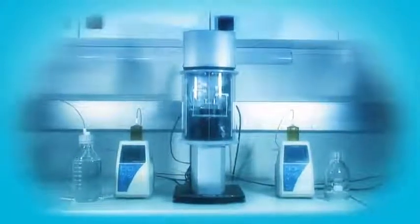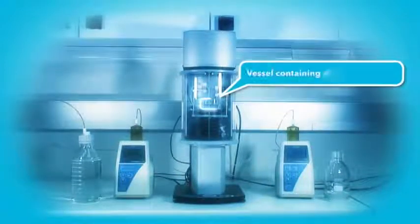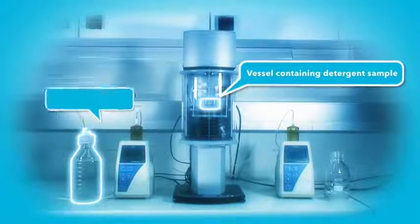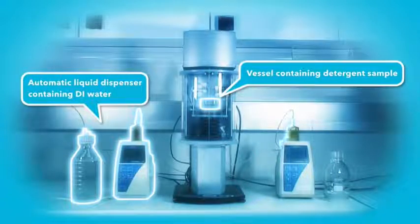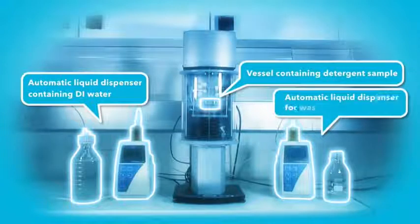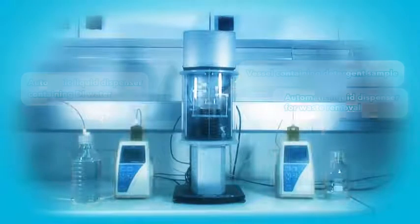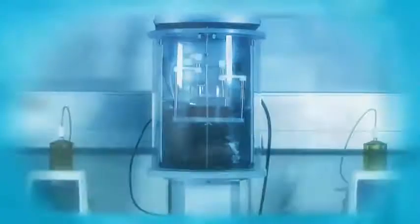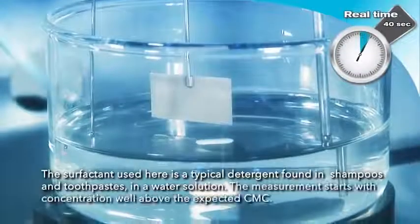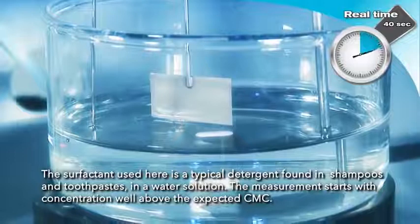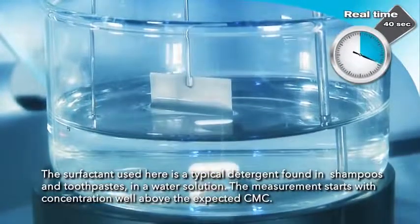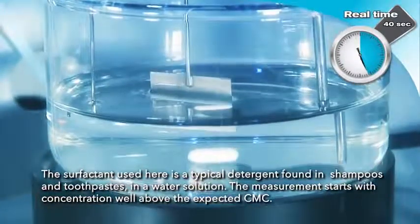A concentrated surfactant solution is on the sample stage and two dispensers are connected to sigma. One dispenser is used to add diluting water and the other to remove excess liquid. The surfactant used here is a typical detergent found in shampoos and toothpastes in a water solution. The measurement starts with concentration well above the expected CMC.